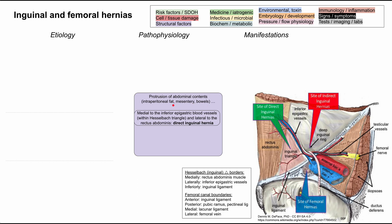For instance, if the abdominal contents are protruding medial to the inferior epigastric blood vessels within Hesselbach's triangle and lateral to the rectus abdominis, it's a direct inguinal hernia. These are the inferior epigastric vessels, medial is in this direction, and the rectus abdominis muscle is here — this would be called a direct inguinal hernia.